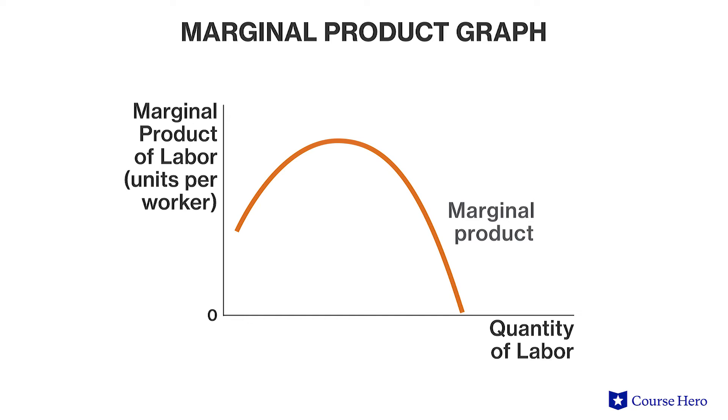When an increase in the input decreases the total output, marginal productivity is negative. Diminishing returns eventually leads to negative returns when the addition of one more unit of input actually causes a reduction in total output.